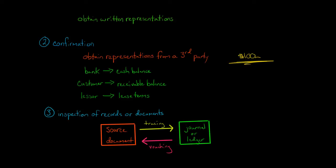Or vouching, where you're going backwards. You start with a journal entry for a sale, for example, and then you go back and see if you can find the source documents. Was there a shipping invoice showing the product was shipped to the customer? Was there a customer purchase order? In each case, you're inspecting documents, but in one case you start with a source document and go forward to see if it ultimately was recorded, so you're testing for completeness.